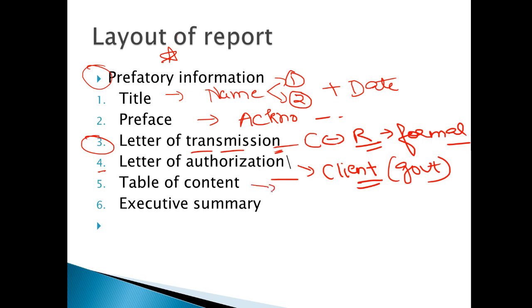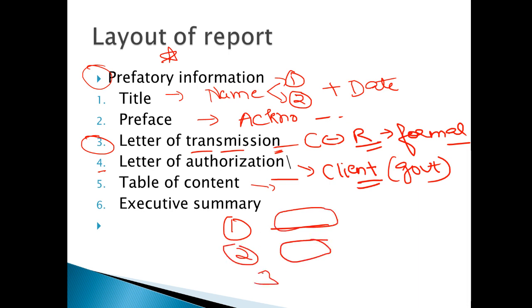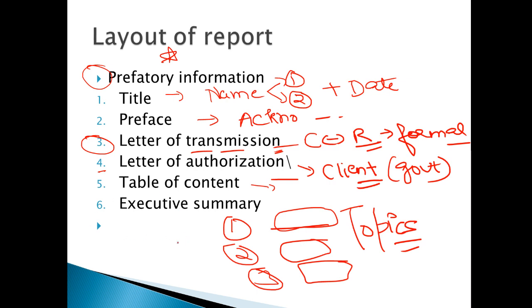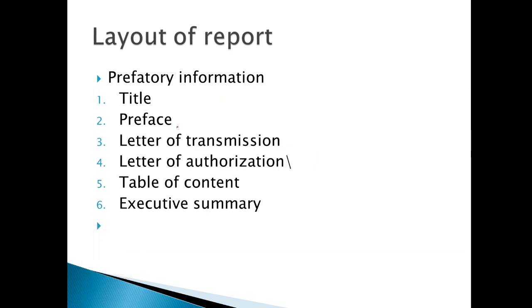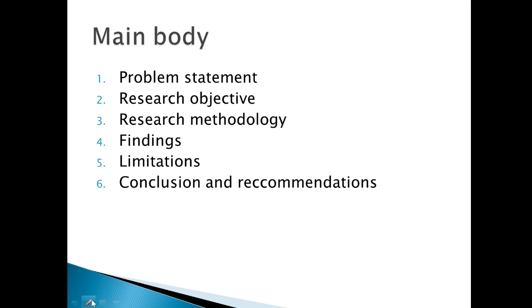Then comes the table of contents — this lists all the chapter names. In the table of contents, you mention all the topics you have covered. Then executive summary, which is a very important part of this section. Here you summarize all the findings. It is like a mini report — briefly, you tell what the entire research covers, what the main body will explain. So remember: our pre-factory part includes title, preface, letter of transmission, letter of authorization, table of contents, and executive summary. After that comes the main body.